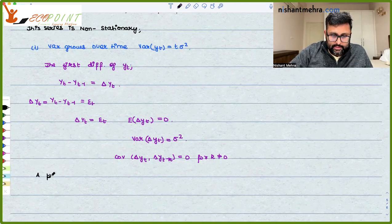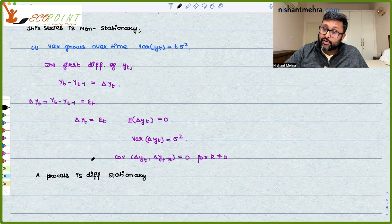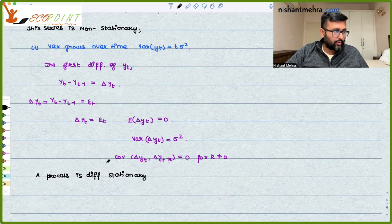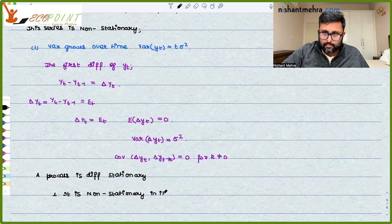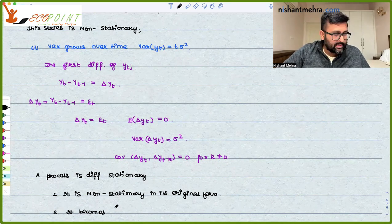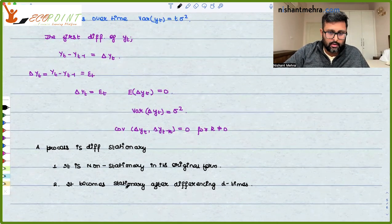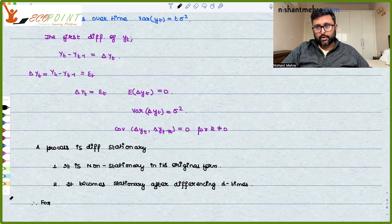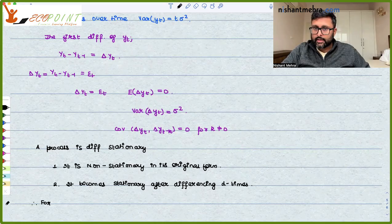A process is difference stationary when it is not stationary in the original form - yt equals yt minus 1 plus epsilon t was non-stationary in its original form. But in the difference form, when d is equal to 1, you've just taken one difference, it becomes stationary.